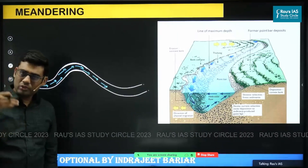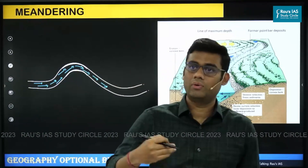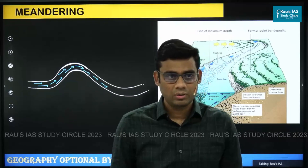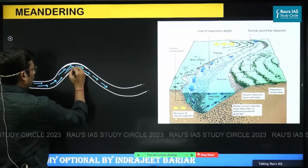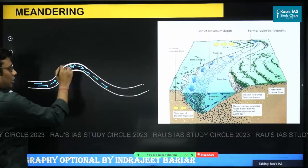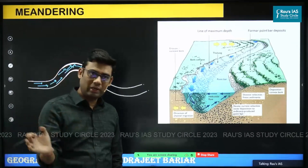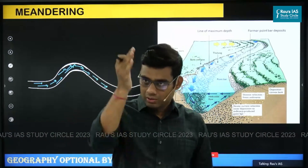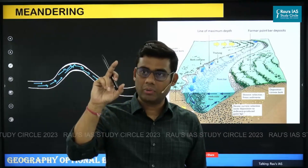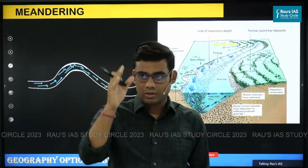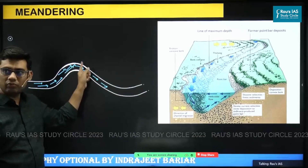On which side would there be more hydraulic force from the flowing river? On the concave side, because the water is flowing and hitting directly this side. So there would be more force over here. Due to more force, there would be undercutting of the walls. The walls are going to collapse — the overhanging part is going to collapse — and so as a result, there would be more erosion of the concave bank.